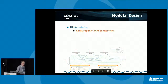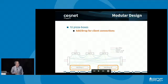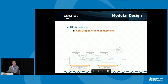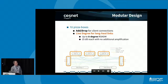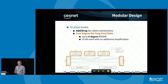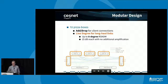In our design, we use this modularity. We use one or two pizza boxes for everything — one pizza box per add-drop node and one per line degree, meaning per long-range link. The system allows us to build a ROADM of up to eight degrees, which is quite a lot, since in the real world almost nobody builds ROADMs of a degree higher than six.